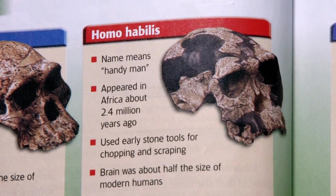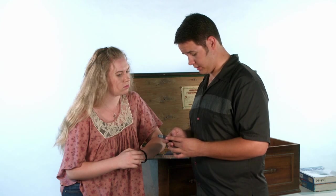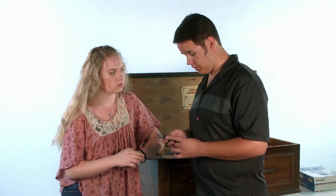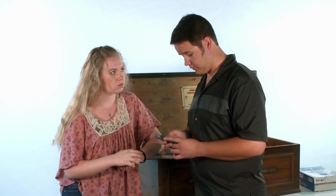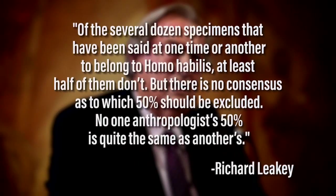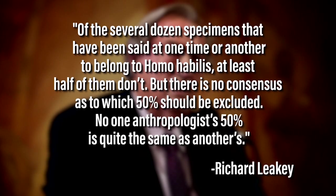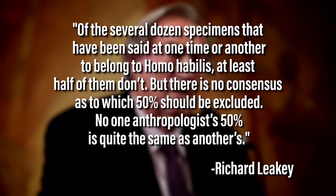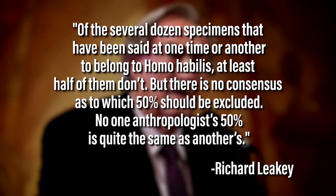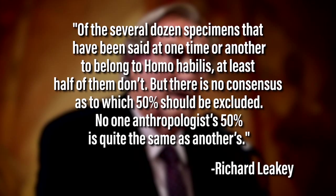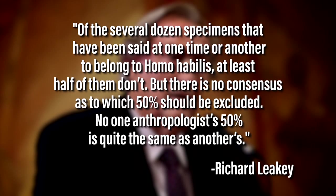The next ape man back is Homo habilis. Homo means human. So they're trying to make him look more human-like than he really is. Richard Leakey is a famous evolutionist, and he said, Of the several dozen specimens that have been said at one time or another to belong to Homo habilis, at least half of them don't. But there is no consensus as to which 50% should be excluded. No one anthropologist's 50% is quite the same as another's. So they can't even really classify which fossils are supposed to go into which category.